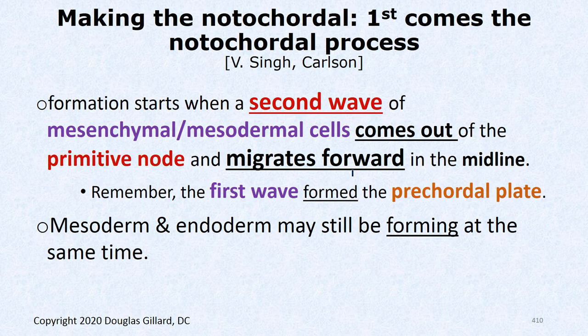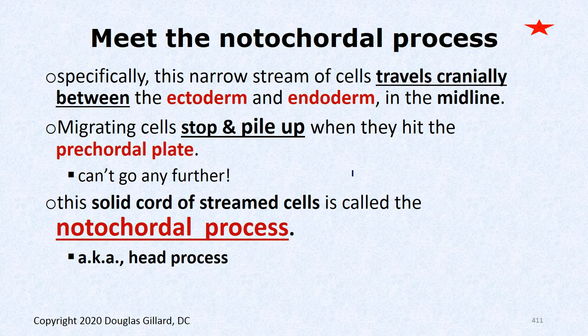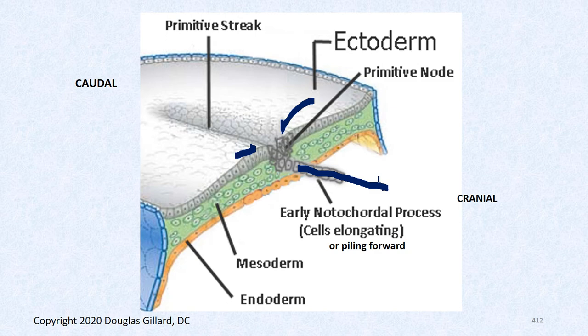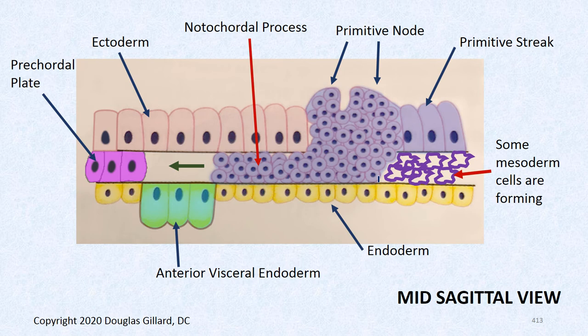Mesoderm and endoderm are still forming at this point. The nodal chordal process is a narrow beam of cells between the ectoderm and endoderm. It piles up and these migrating cells get blocked at the pre-chordal plate. Some call it the 'head process' — particularly European books — but most call it the nodal chordal process. Cells stream through forming this process forward from the primitive streak.